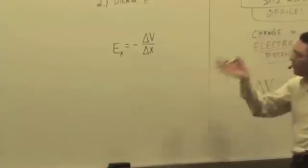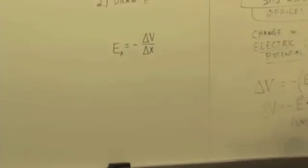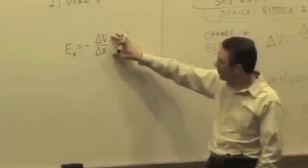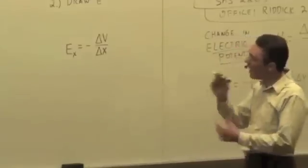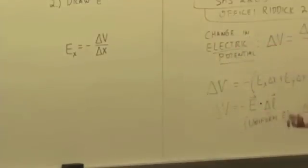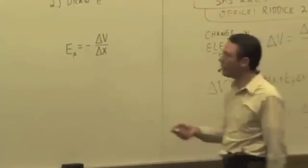If you know the field lies along some direction, then you can find the electric field by taking the potential difference and dividing by the path along that direction. So we're just using the opposite relationship here.